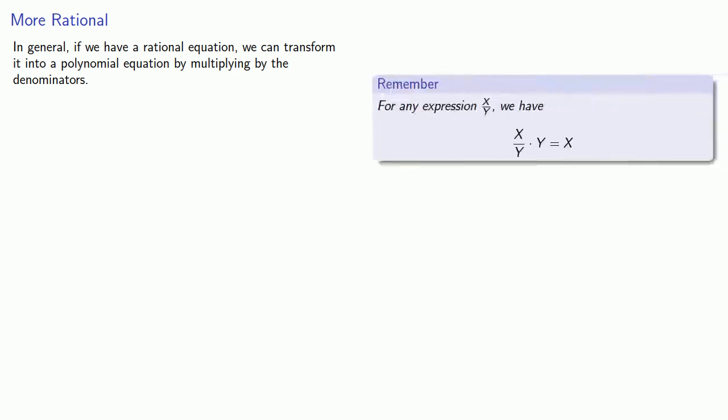This better way centers around the following idea. In general, if we have a rational equation, we can transform it into a polynomial equation by multiplying by the denominators. That's because for any expression x over y, we have x over y times y will just be the numerator x.